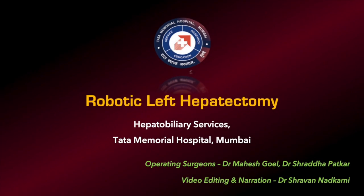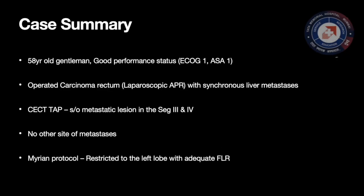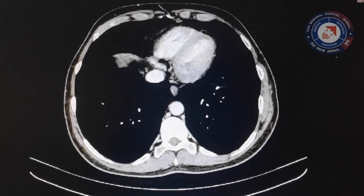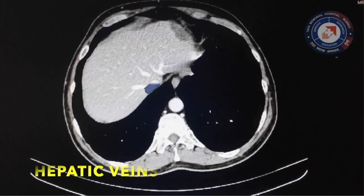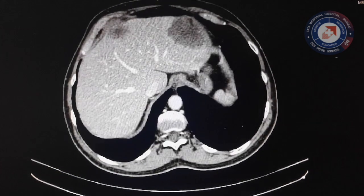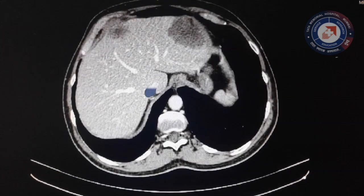Presented here is a video of left hepatectomy performed with the Da Vinci XI robotic surgical system. Our patient is a 58-year-old gentleman with good performance status, noted to have synchronous hepatic metastasis from a rectal adenocarcinoma, status post abdominal perineal resection. Imaging confirmed metastatic deposits in segments 3 and 4 of the left liver with adequate functional remnant for a planned left hepatectomy.